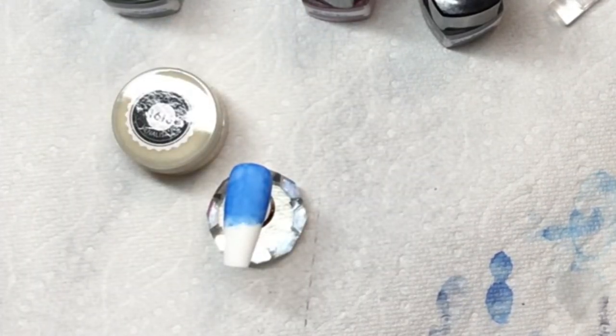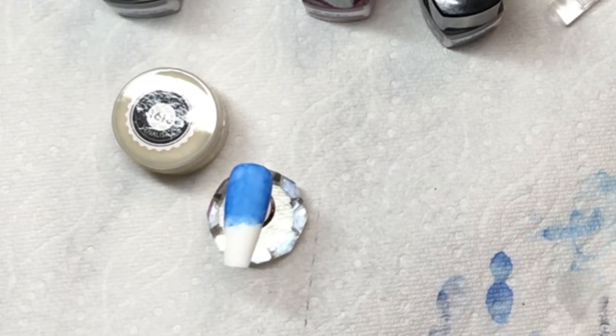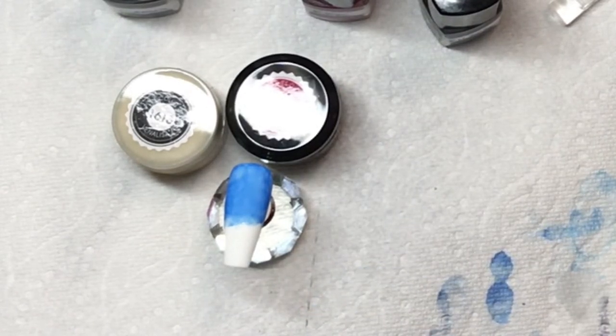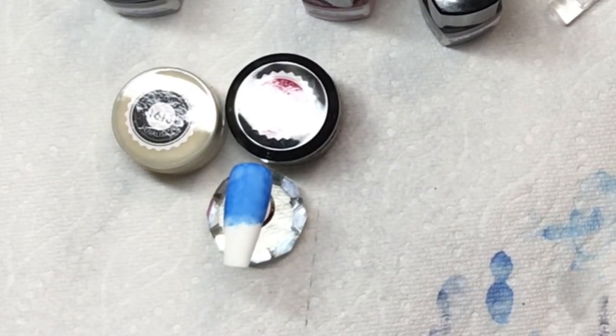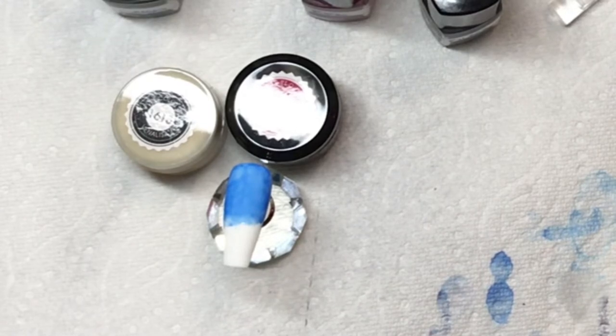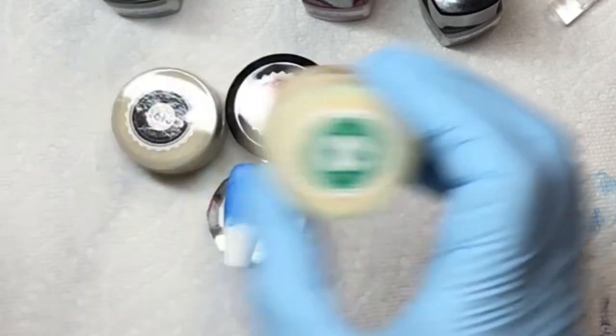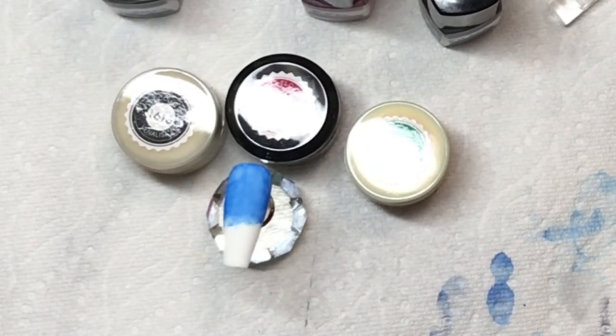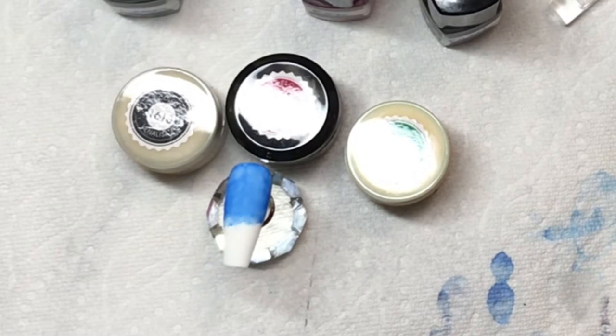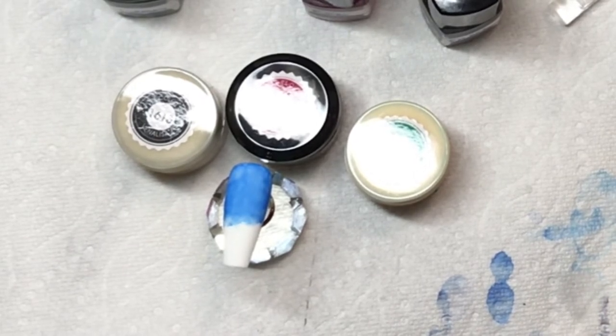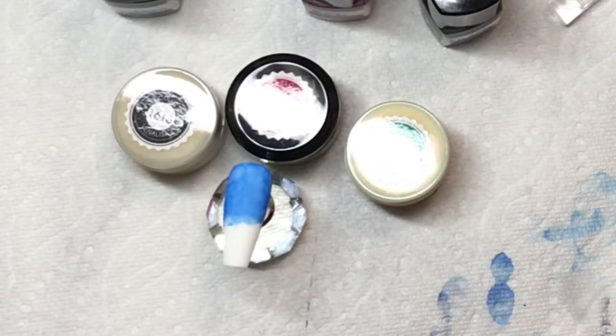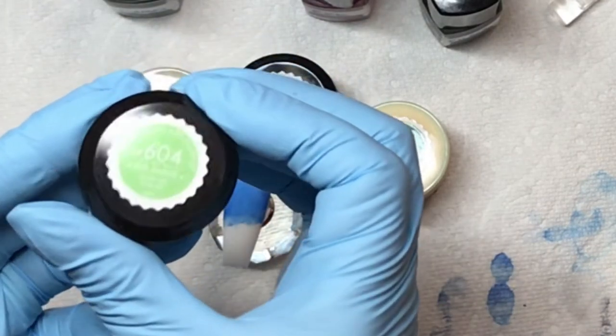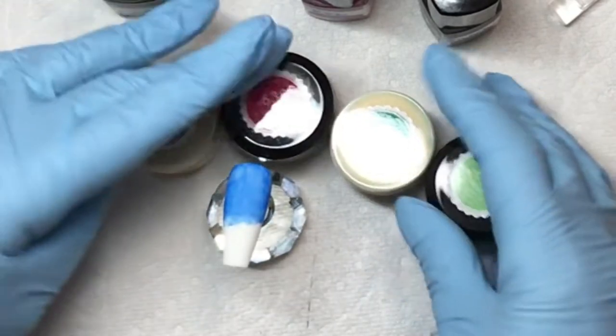So I'm using black 1613, I think it is, or 1610 from Venalisa, and a red from Canni, two greens and a yellow. 1609 from Venalisa green, 604 from Canni.